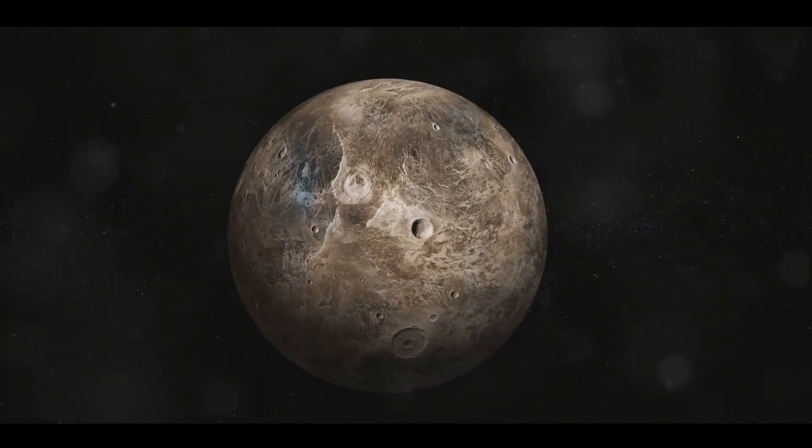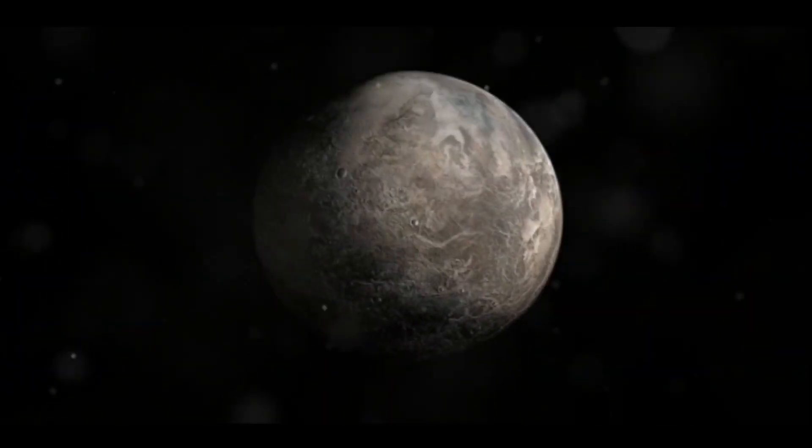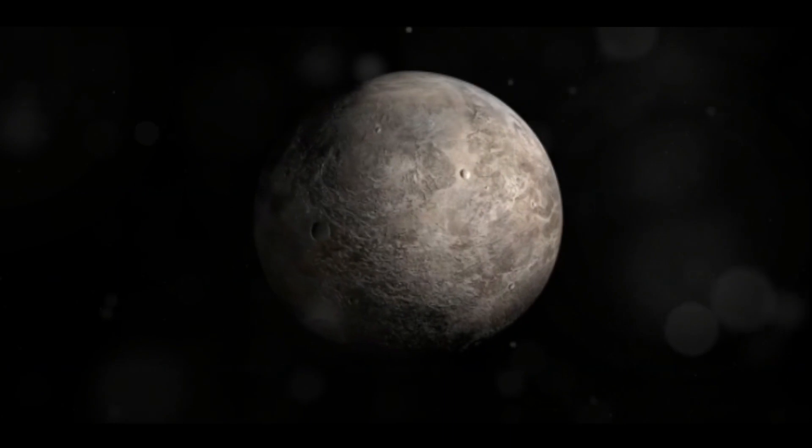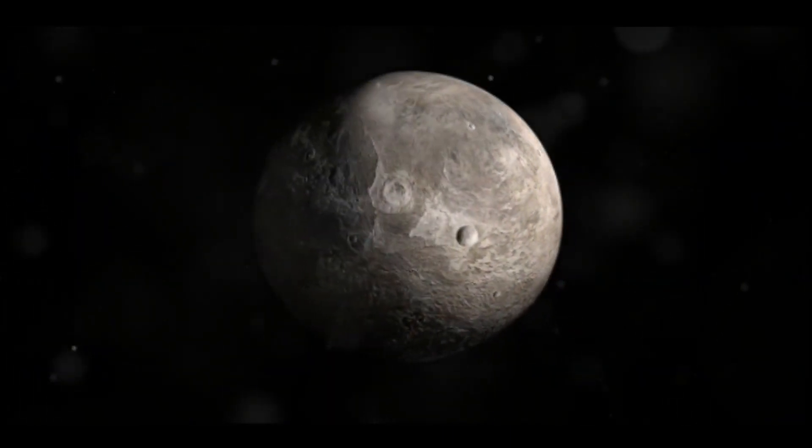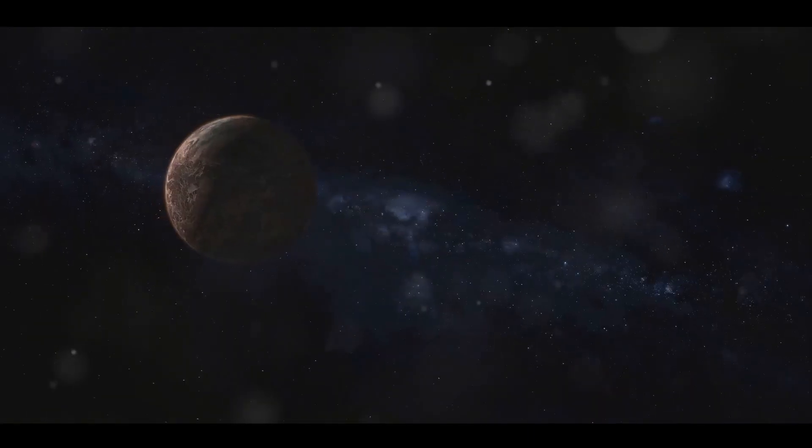Last but certainly not least, we venture to Ceres, the smallest of the recognized dwarf planets, and the only one located in the asteroid belt between Mars and Jupiter. Ceres is only about 900 kilometers in diameter, but it's a fascinating world nonetheless.